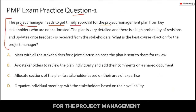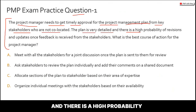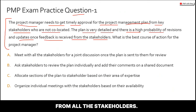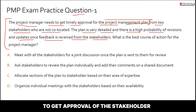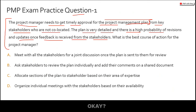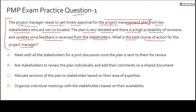Question one: The project manager needs to get timely approval for the project management plan from key stakeholders who are not co-located. The plan is very detailed and there is a high probability of revisions and updates once feedback is received. Most likely the project is in the planning stage, and the project manager needs stakeholder approval to move from planning to execution. What is the best course of action?